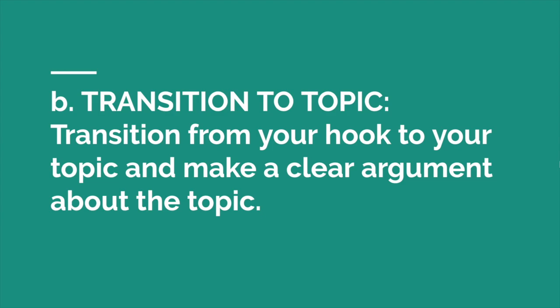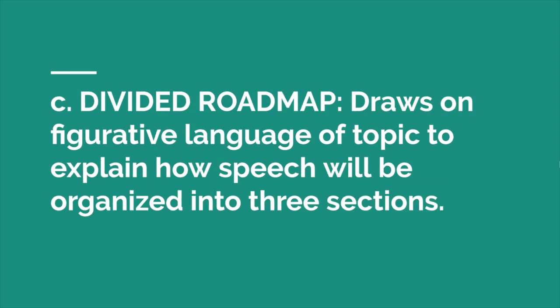If you say advertising is a way for companies to try to get you to buy their products, well, everybody already knows that's what advertising is, so it'd be a very boring speech. After you transition to your topic and give that kind of thesis statement, the introduction ends, as with every other speech event, with a divided roadmap. Typically you're using the figurative imagery of your topic to provide an outline of your speech in three major parts. The rule of three is a very nice way to organize — people like threes — so it's important to divide your speech into three parts.